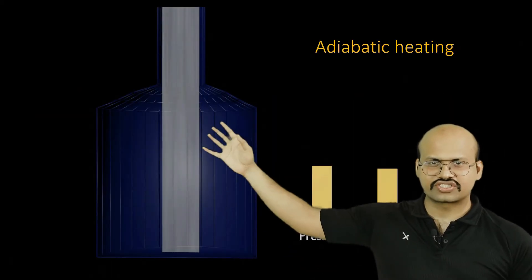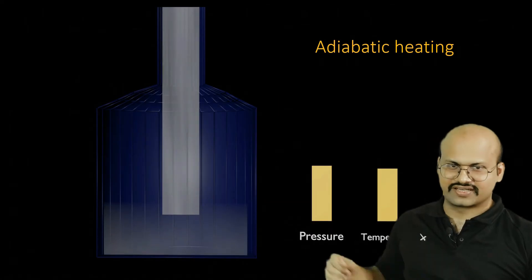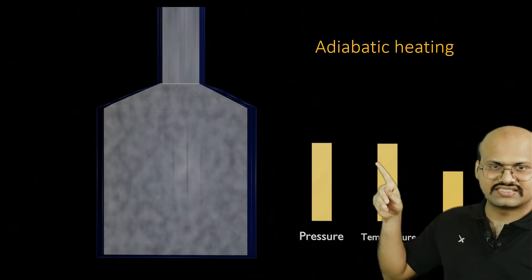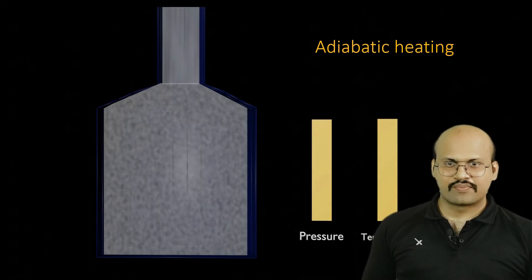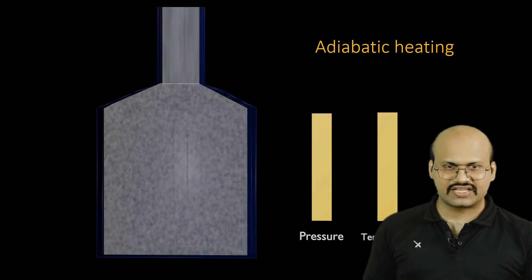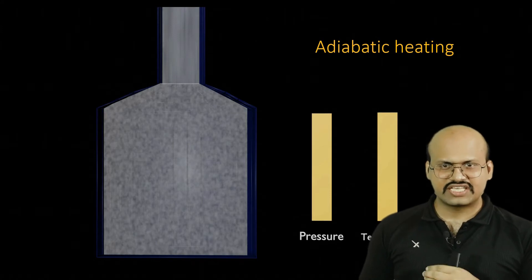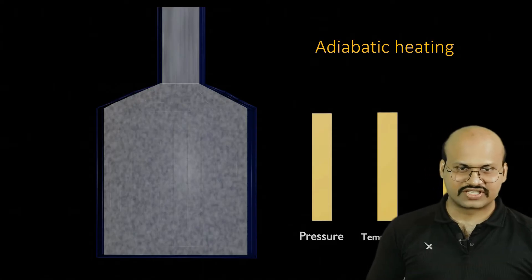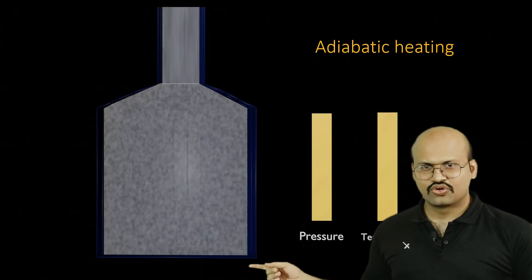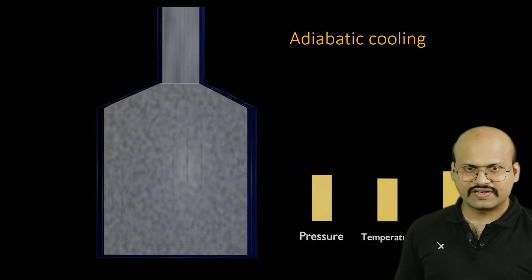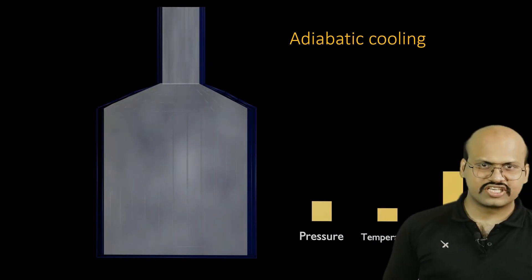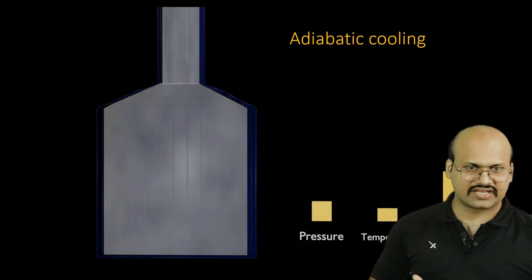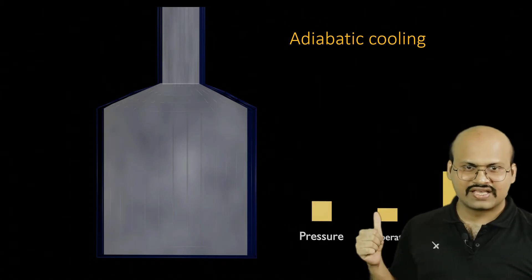Here we can see a vessel with a constant volume, and we are continuously adding more gas into it. As we increase the amount of gas, pressure increases — and with that increase in pressure, temperature also increases. Remember, we are not providing any external source of heat; the temperature increases merely because pressure has increased. This process is called adiabatic heating — no external heat source, but pressure or volume change causes a temperature change. Similarly, if we remove gas from the vessel rapidly, pressure decreases and temperature also decreases. This is called adiabatic cooling — by changing the pressure or volume alone, we get a resultant change in temperature.